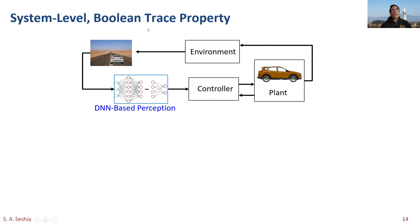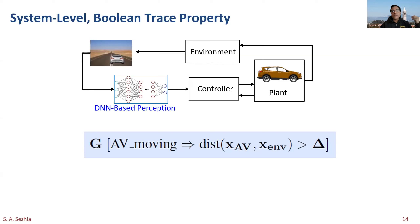A system-level Boolean trace property: going back to the automated emergency braking system example, you might have a property specified in metric temporal logic or signal temporal logic, saying something like: always, while the autonomous vehicle is moving, the distance between the AV position and some environment object is at least a minimum threshold Delta. That's the kind of property you would write in a standard temporal logic, and it's a reasonable property for this class of systems.